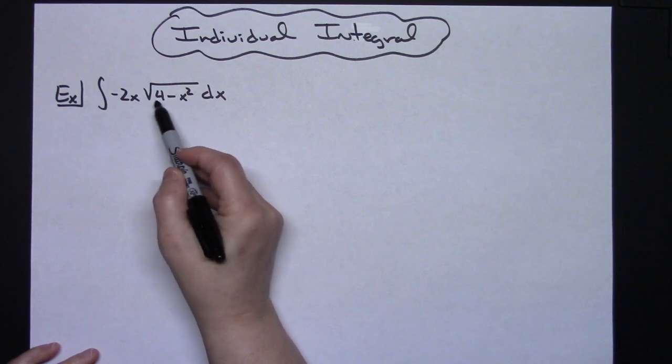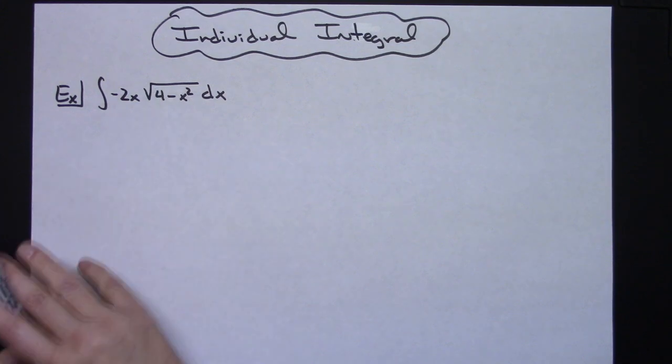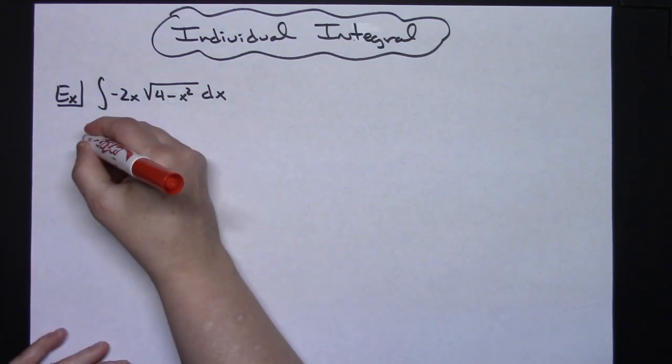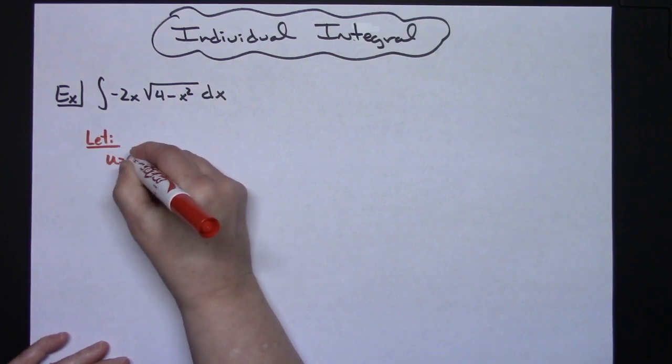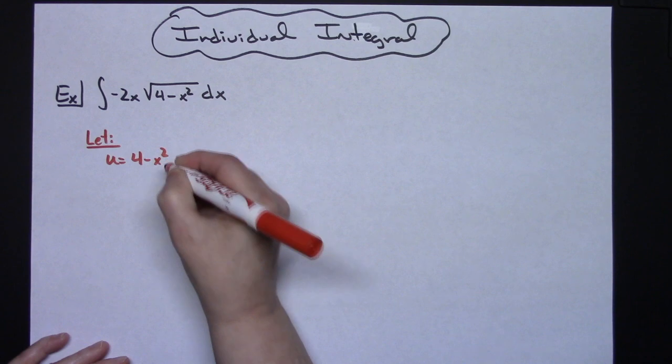I'm going to look for that inside portion of the function right there and I'm going to let my u be that 4 minus x squared. So we will start with let u equal 4 minus x squared.